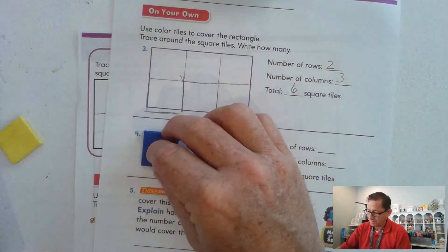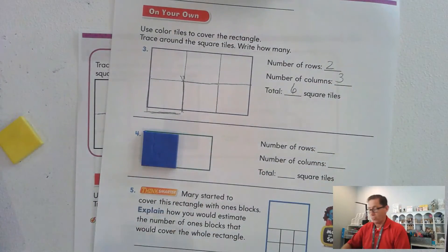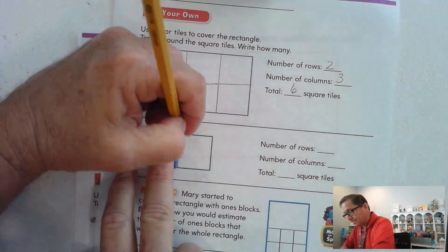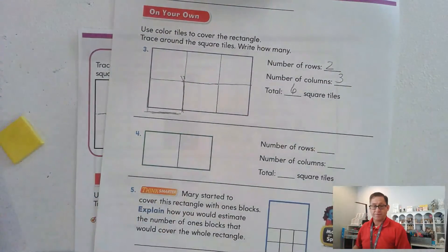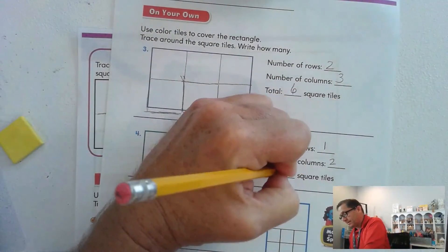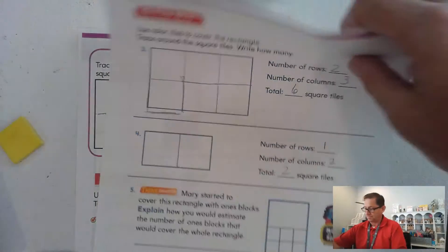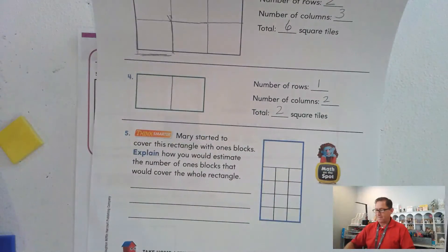And how about this final one? So we can only get one row. And we're only going to be able to get two columns. So a total of two.